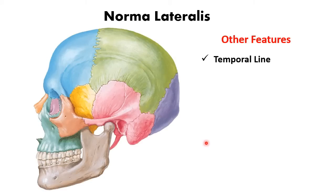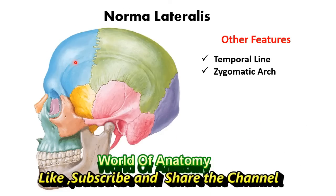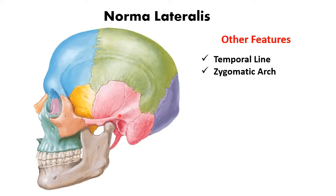The zygomatic arch is the horizontal bar you can see on the lateral aspect. It is formed by the temporal process of the zygomatic bone and the zygomatic process of the temporal bone. Its superior border continues anteriorly as the temporal lines and posteriorly as the supramastoid crest.